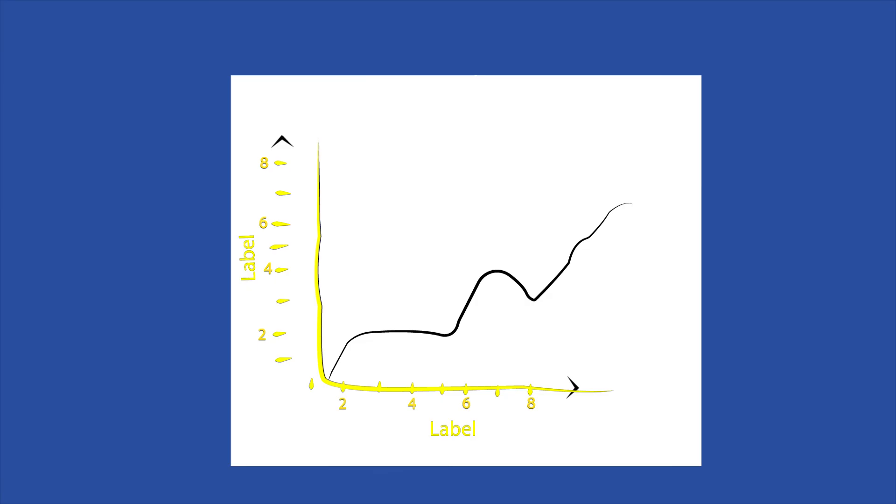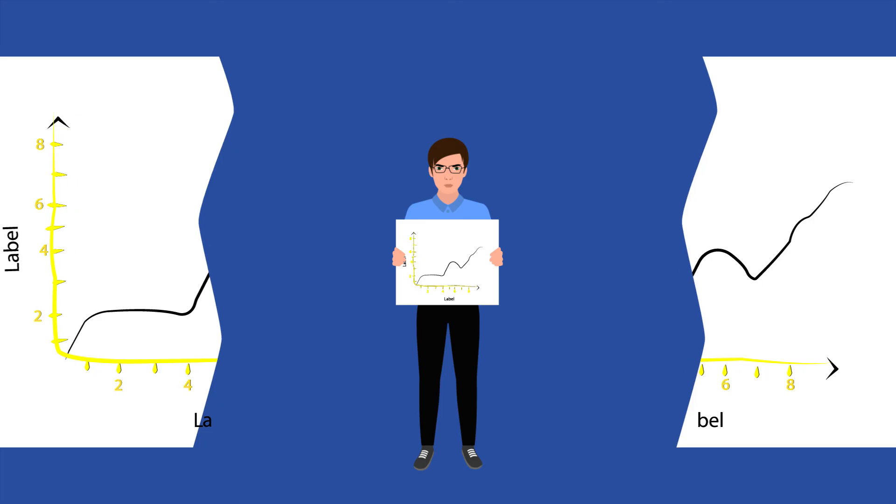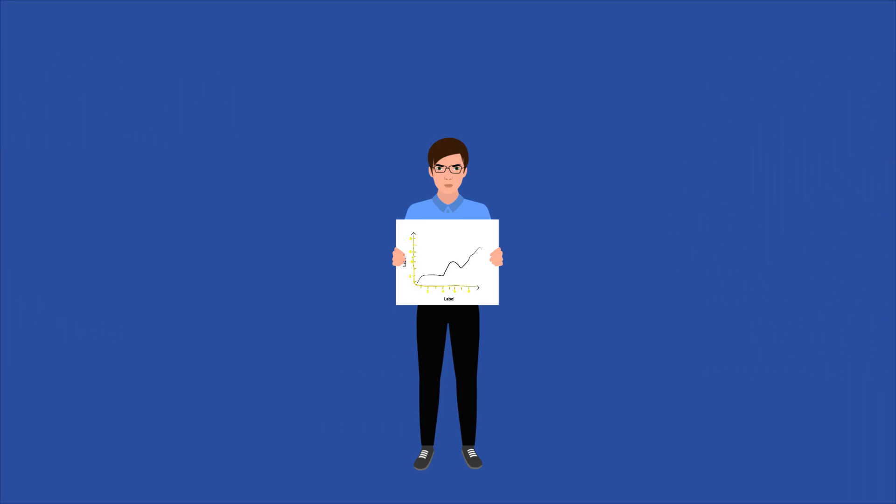Also, consider if the study's data is useful and provides a good representation of the research objective. Finally, remember that behind each graph is a person or organization. Think about the motivations and biases they may have and whether or not these factors have influenced the depiction of the graph.